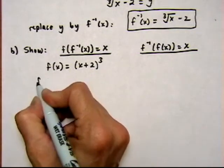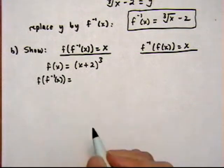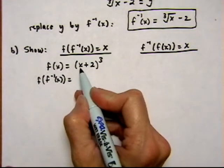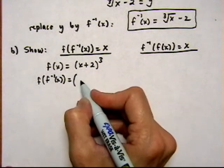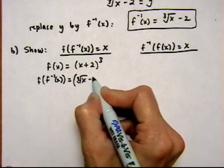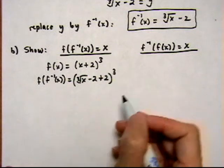And then we want to find f of f inverse of x. So if we replace the x by f inverse, which is cube root of x minus 2, and then bring down this plus 2. And it's all being cubed.